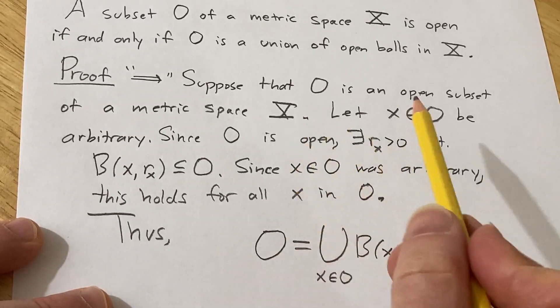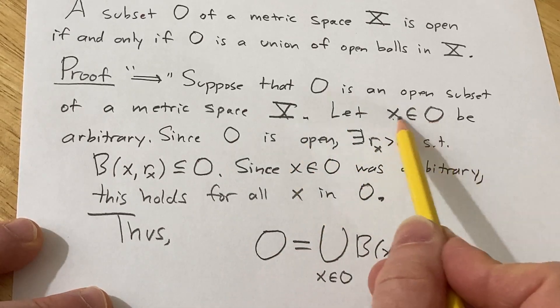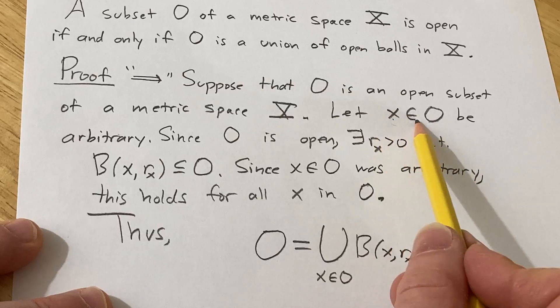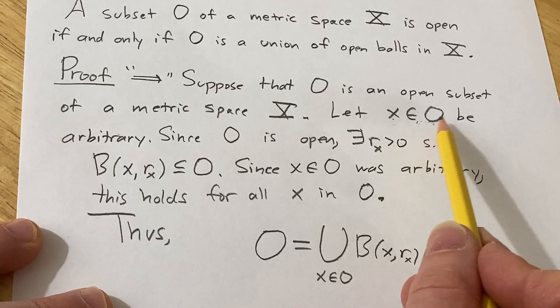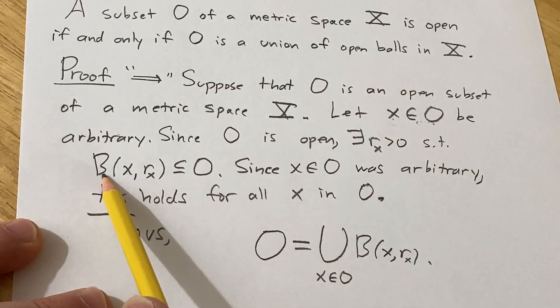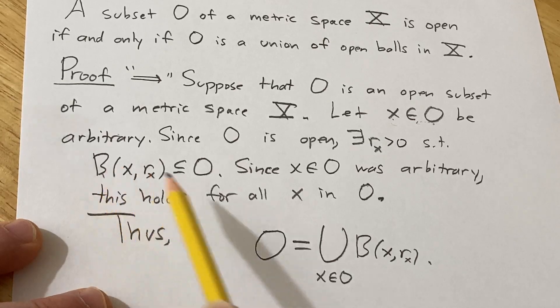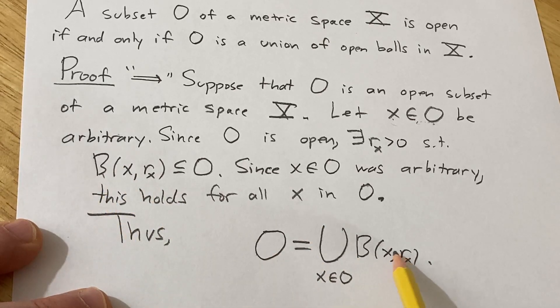for every x in O, we said it was arbitrary. So for every x in O, we have x in one of these balls. Which means that basically for every x in here, you're going to have x in one of these balls. Therefore, O is contained in the union of these balls.